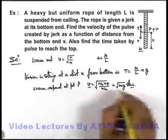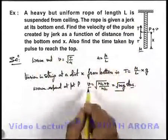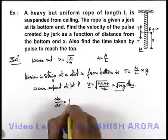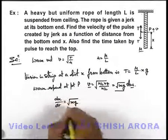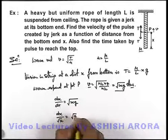And as the speed is root x g, we are also required to find the time taken by the pulse to reach the top. This v we can write as dx by dt which is written as root of x g. So here we can write dx by root x is equal to root g dt.